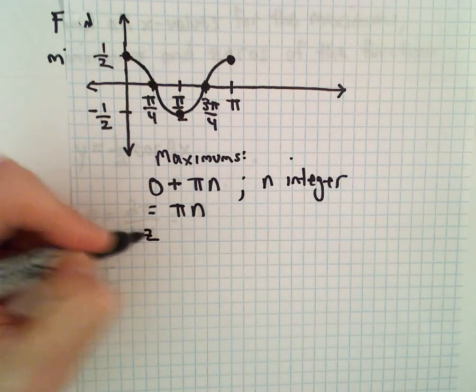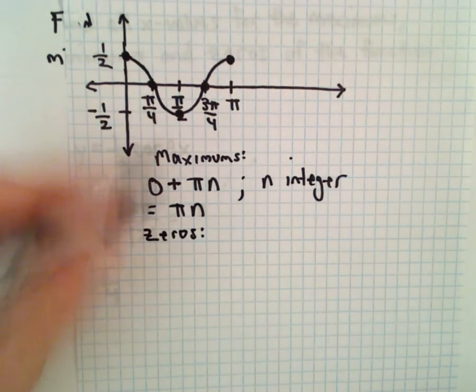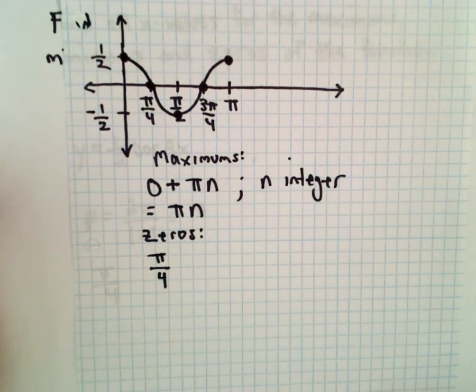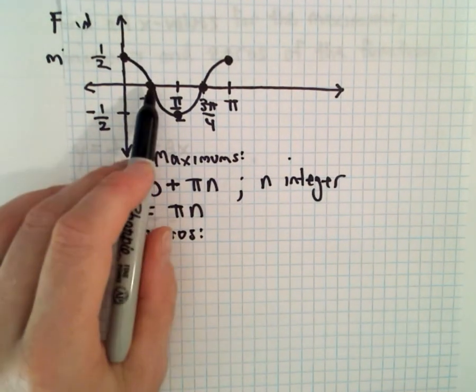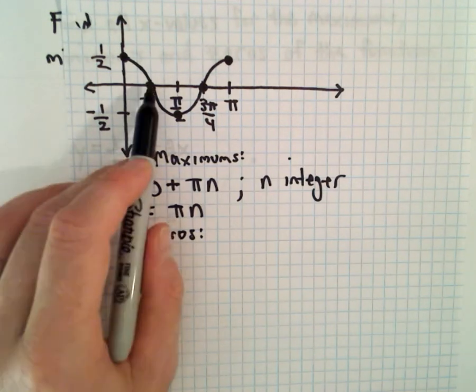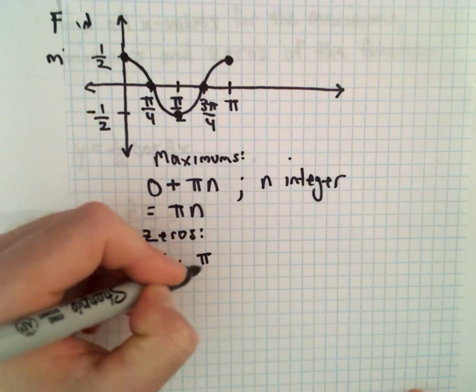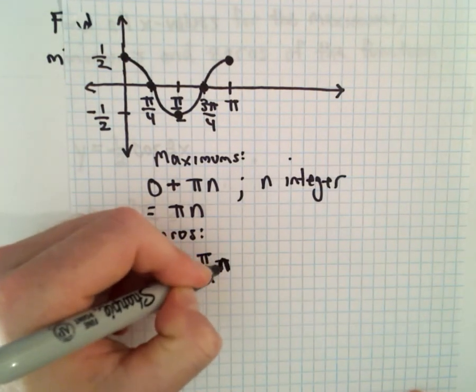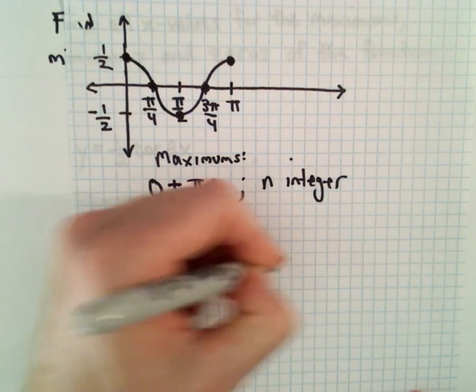The zeros—the first zero occurs at π/4, the first positive zero. And to get to the next zero, you only have to go half of the period. So half of the period will be π/2, again multiplied by n, where n is an integer.